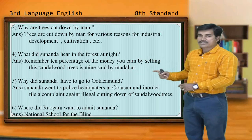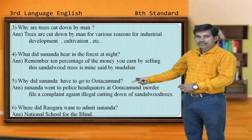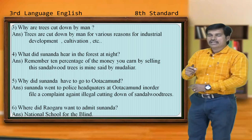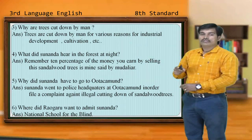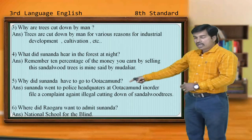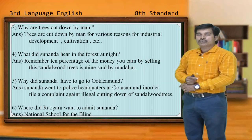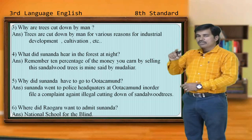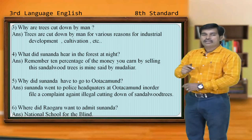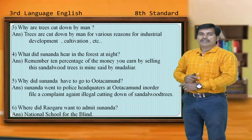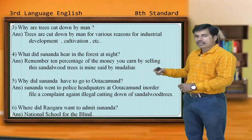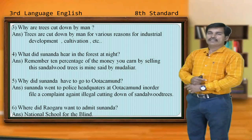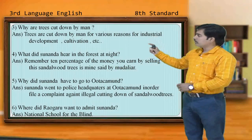And the last question: Where did Rav Garu want to admit Sunanda? He is the headmaster of the village school. At last we come to know that Rav Garu wanted to admit Sunanda in one of the schools — that is the National School for the Blind. If you observe the last page of the lesson, it is mentioned that the headmaster Rav Garu wanted Sunanda to join the National School for the Blind. That is the answer for all these questions.